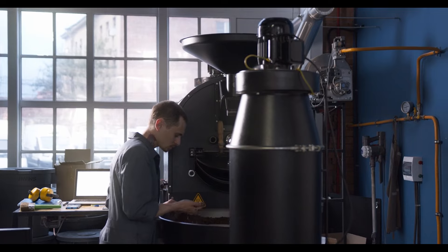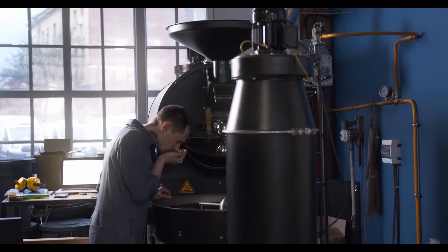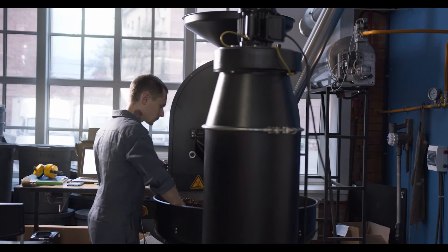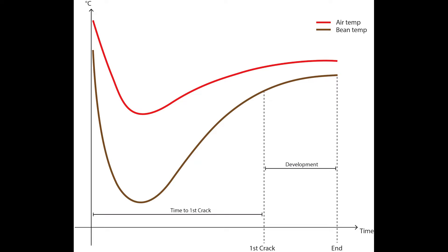Once the beans have been dried they will begin to turn yellow and start to emit a grassy aroma. As the temperature inside the roaster continues to increase, the beans will reach a temperature of around 200 degrees centigrade. At this point the beans will start to make a cracking noise, marking the beginning of the first crack. This is when the beans start to release their oils and expand in size. The roaster will continue to increase the temperature until the beans reach the desired level of roast, with light roasts requiring less time and dark roasts requiring more.